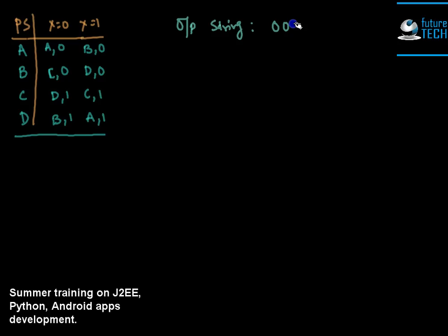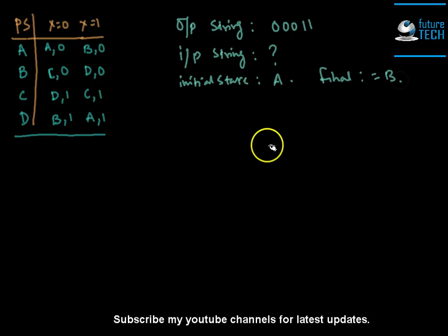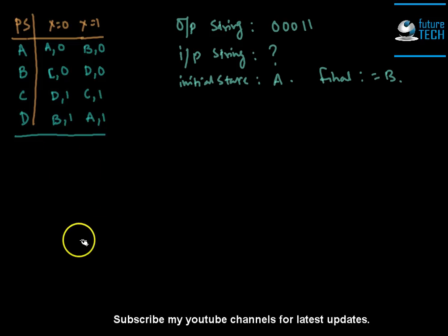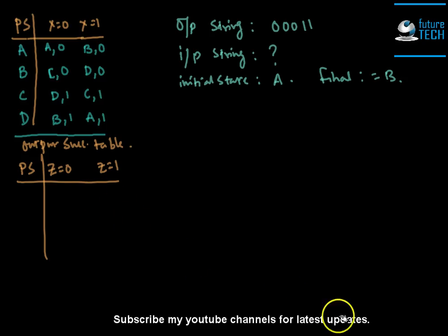The output string given is 00011, the initial state is A, and the final state is B. To find the input string, we need to develop an output successor table from the given machine. The output successor table has present states A, B, C, D, and two columns for output symbols z=0 and z=1.